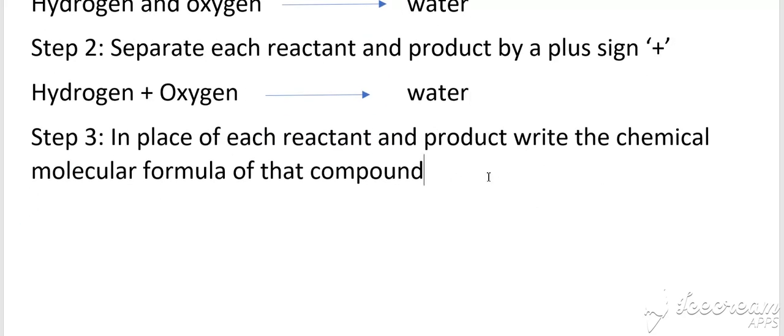What is the third step? The third step is: in place of each reactant and product, you write their molecular formula. So molecule of hydrogen has formula H2 since it is a diatomic gas, and then molecule of oxygen, since it is diatomic, has this formula O2. And molecule of water has formula H2O, and in between we have this arrow.